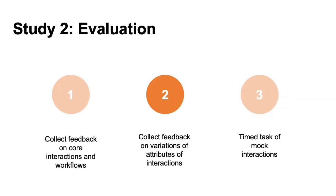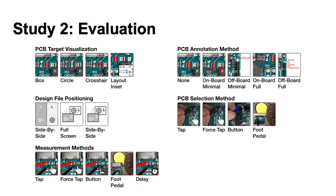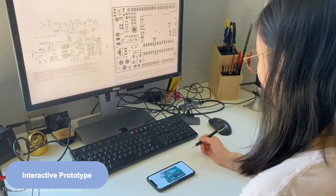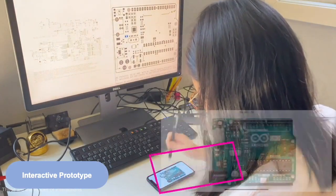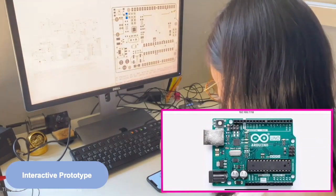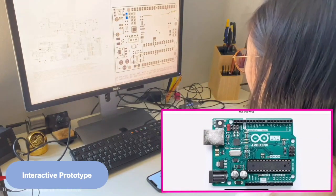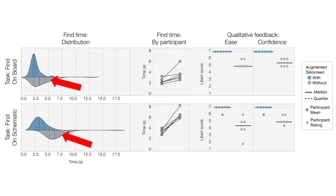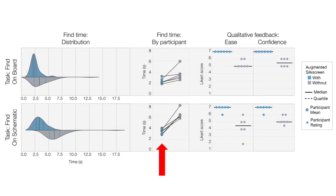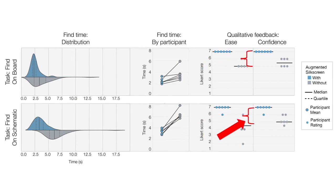Next, we evaluated varying certain attributes of these interactions, including preferences on how to select items, how much information to display on the PCB, and where to put it. In the interest of time, I won't go into the results of this section, but I encourage you to see the paper if you're interested. Finally, we took a subset of these interactions and performed a timed task with the participants. We developed an interactive prototype to facilitate this remotely, where users could use their own touchscreen device as a stand-in for the printed circuit board. Across two different tasks, participants were more efficient with AR interactions as compared to the traditional method. Additionally, they expressed higher ease and confidence with the AR interactions.